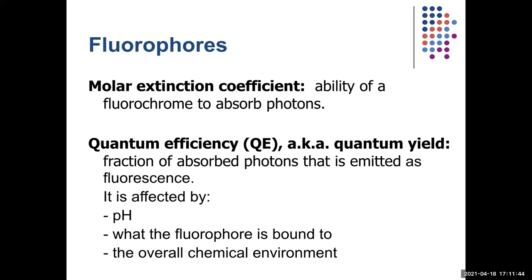When you look up fluorophores, there's a description sheet that tells you the quantum yield. We're very happy with something like 70% — that's actually amazing. If it's only 20%, you won't even see it. There's a set quantum yield that a fluorophore has when it's in solution, which you can easily measure with a spectrophotometer by measuring the amount of light delivered versus the amount of different-colored light emitted.